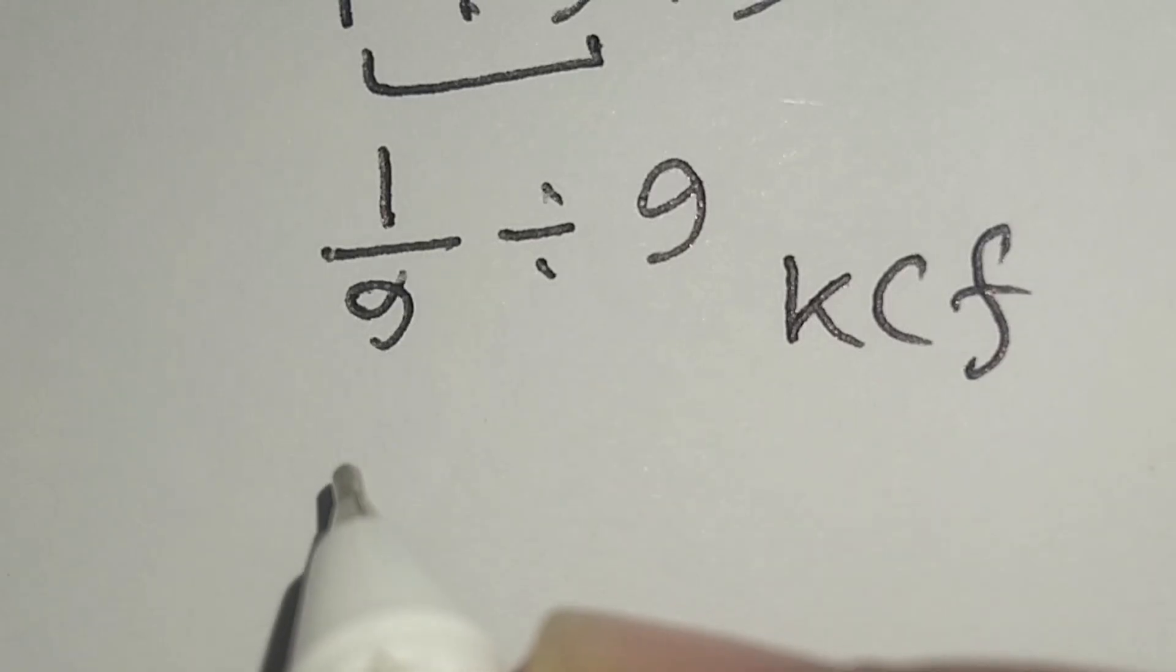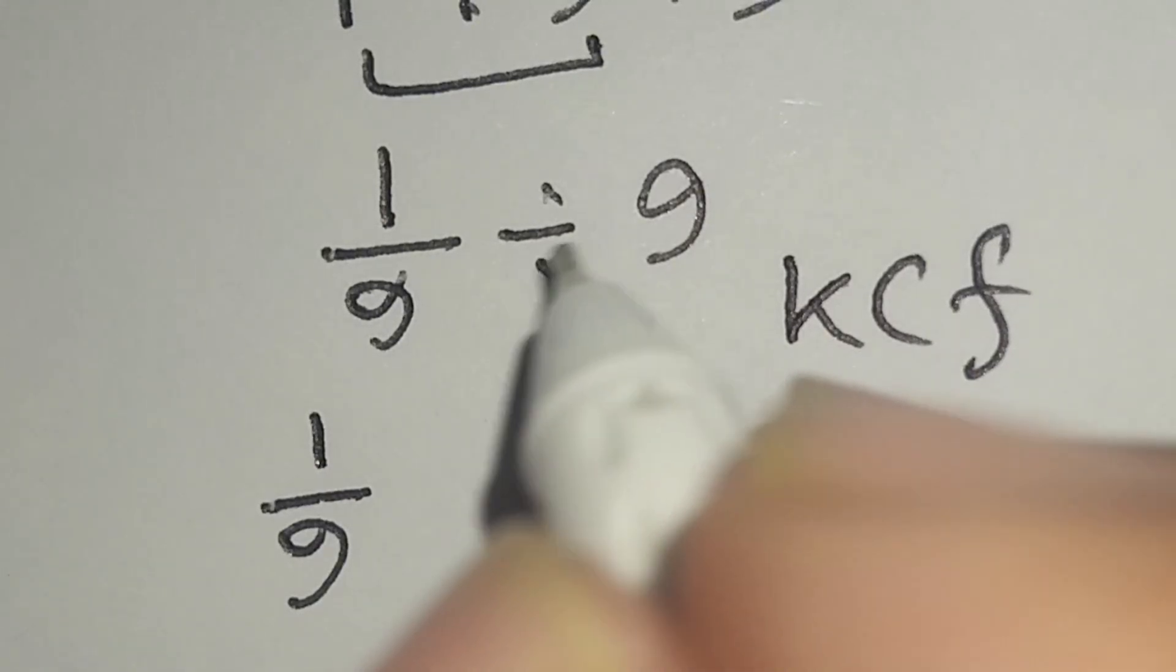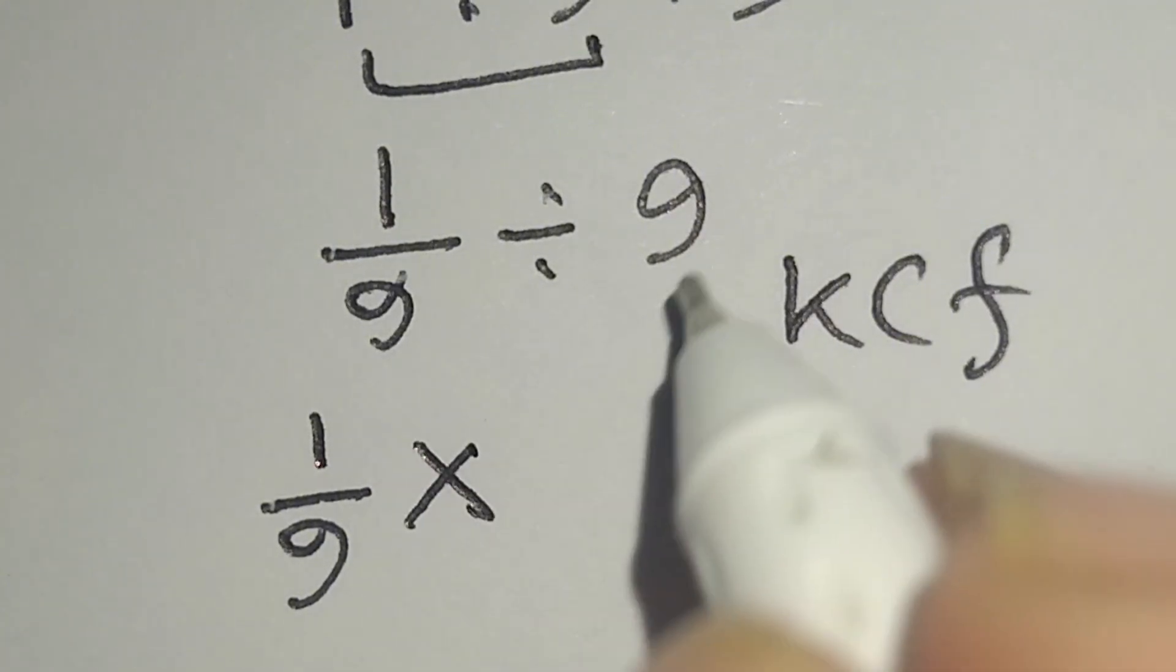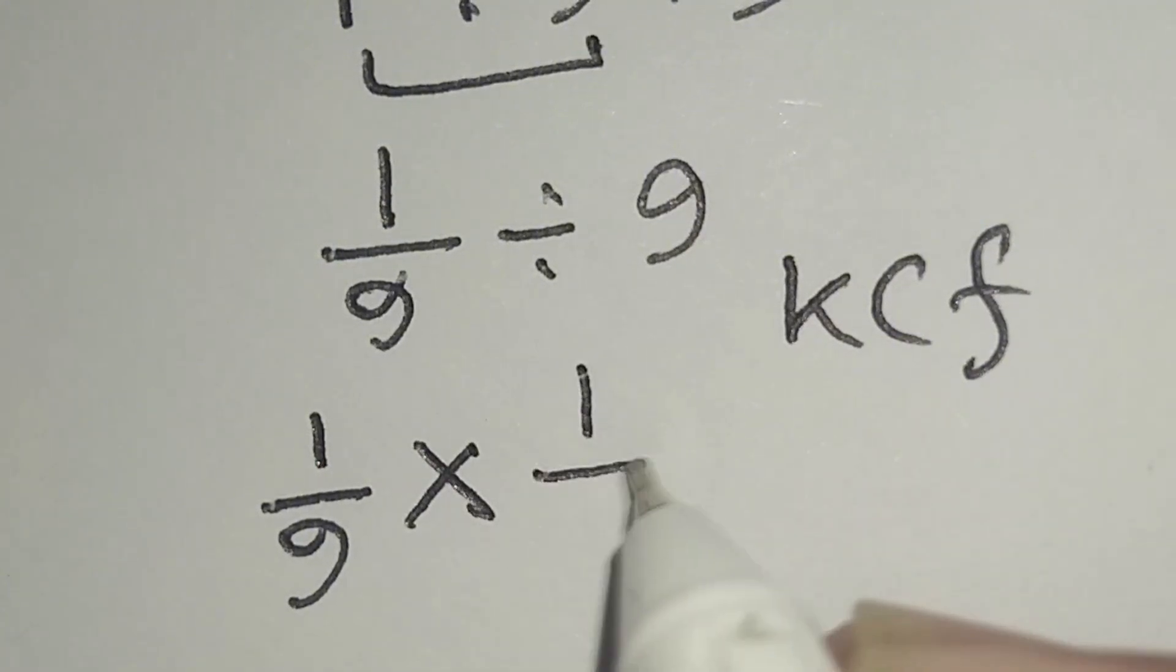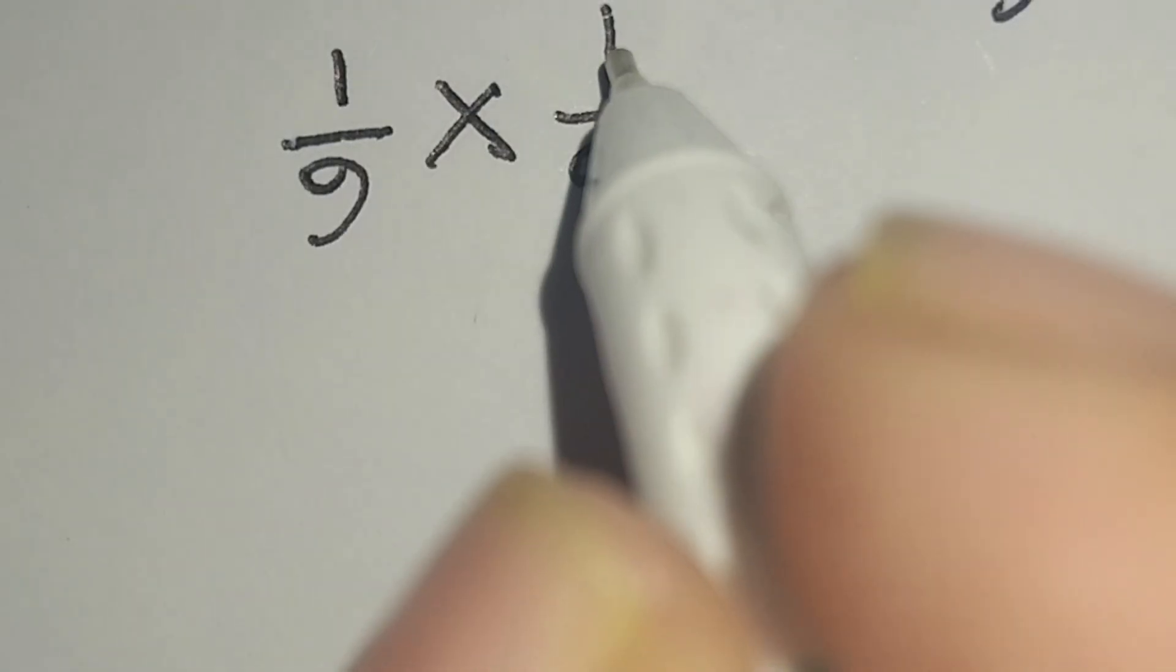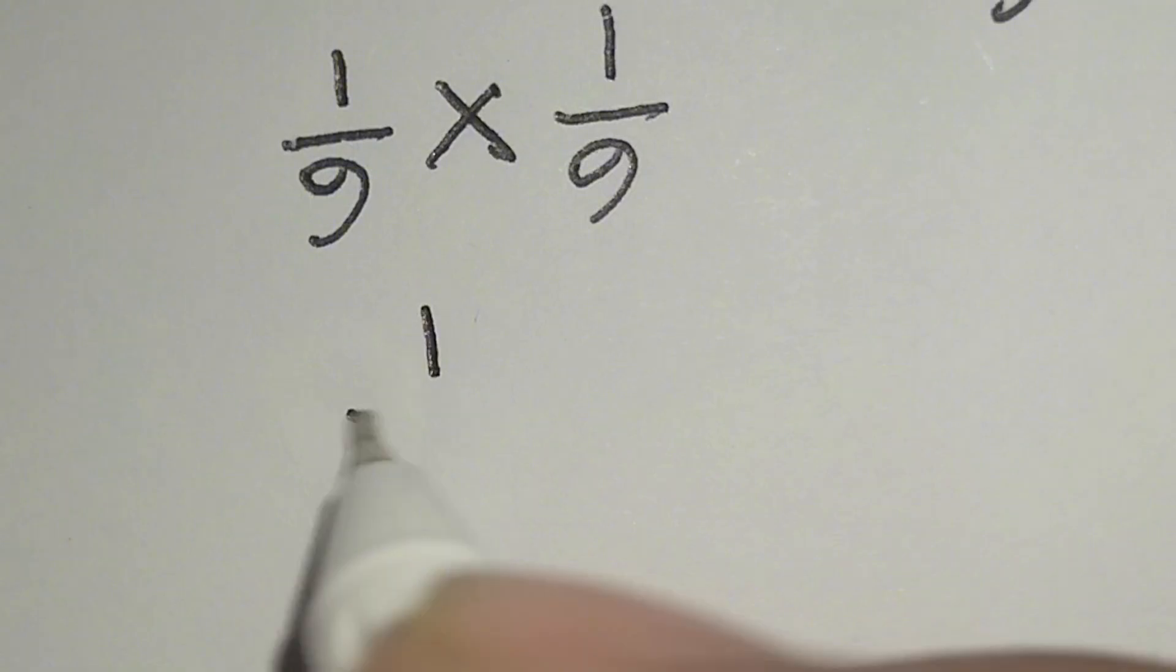Here, we will keep this 1 over 9. Now we will change this division to multiplication and flip this 9 as 1 over 9. Here, 1 times 1 gives us 1 over 9 times 9, which gives us 81.